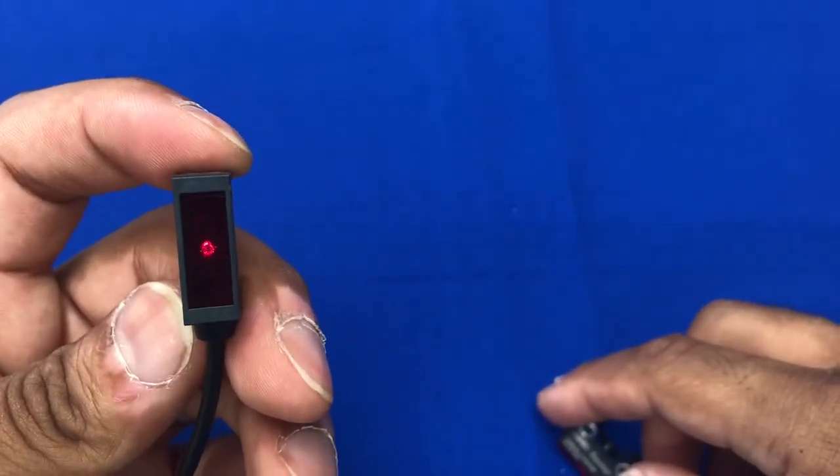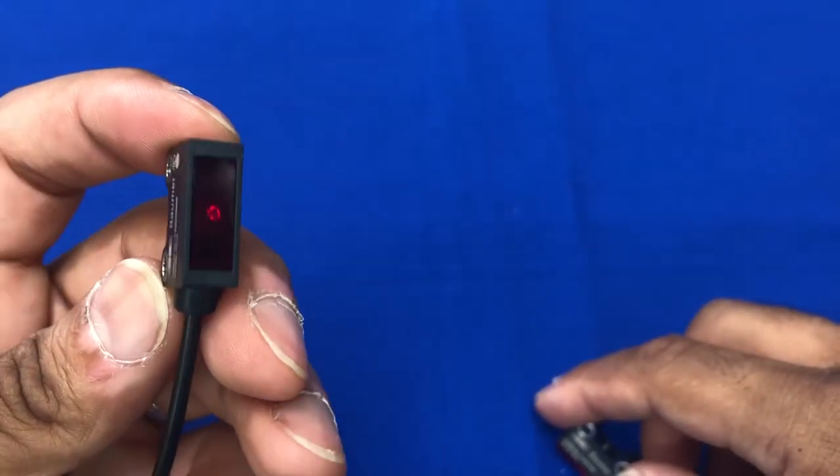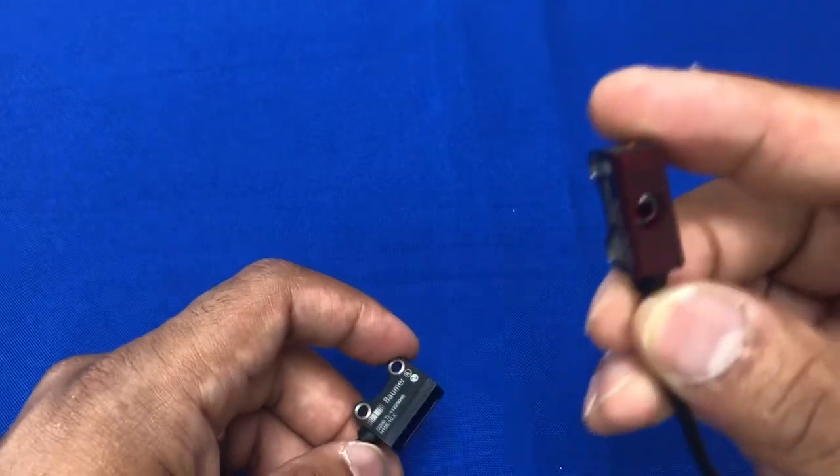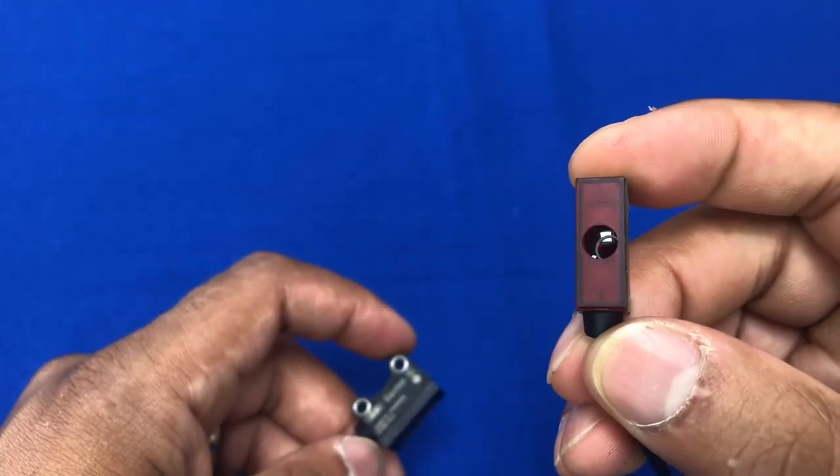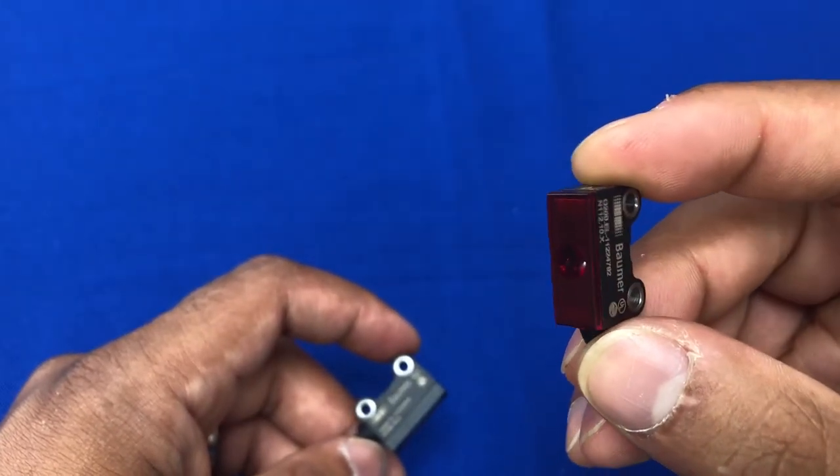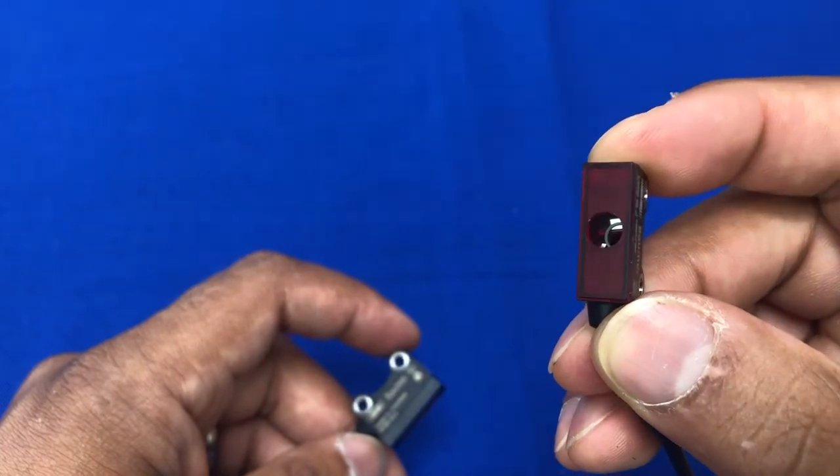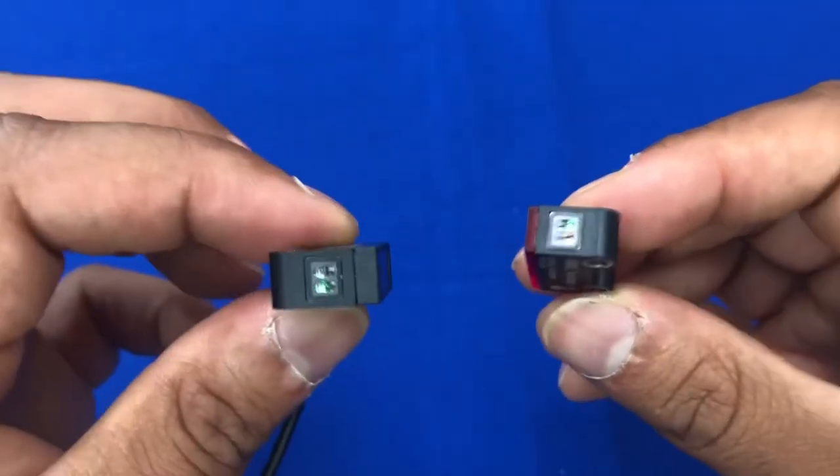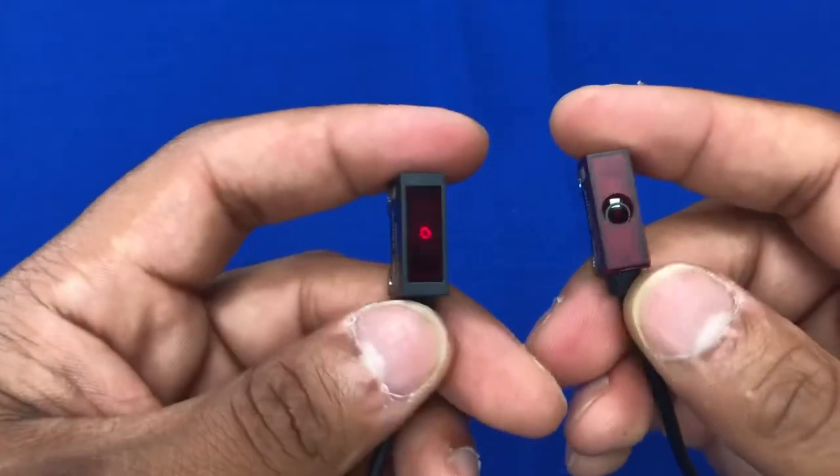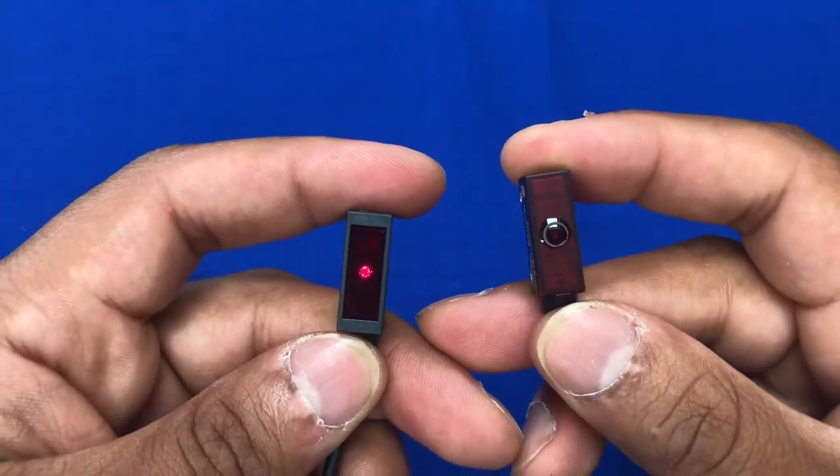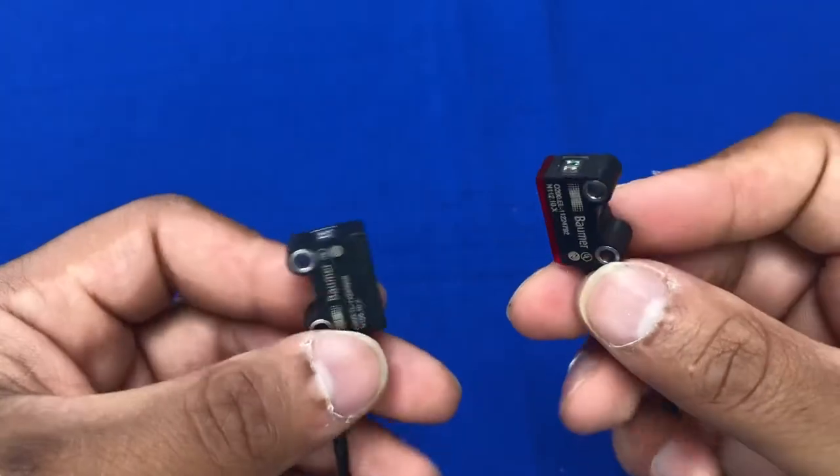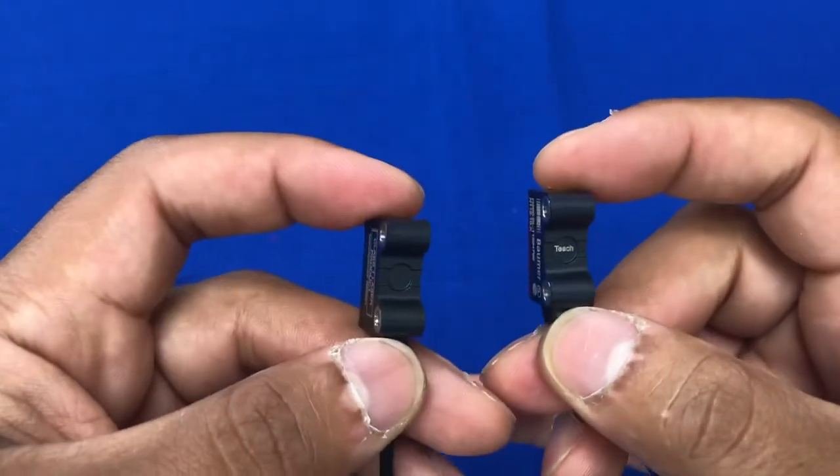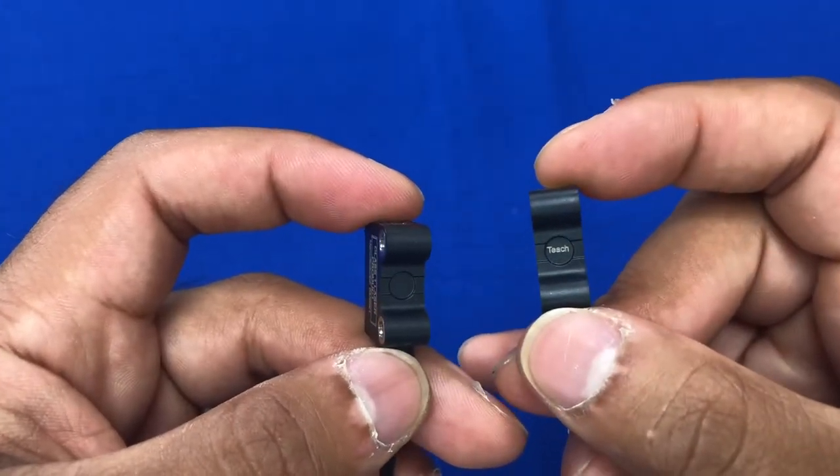You can see the lens on the front there is our emitting lens, and we have our receiving sensor here on the through beam which has a different receiving lens on the front. Identical in size, just different lens on the front - transmitter, receiver.